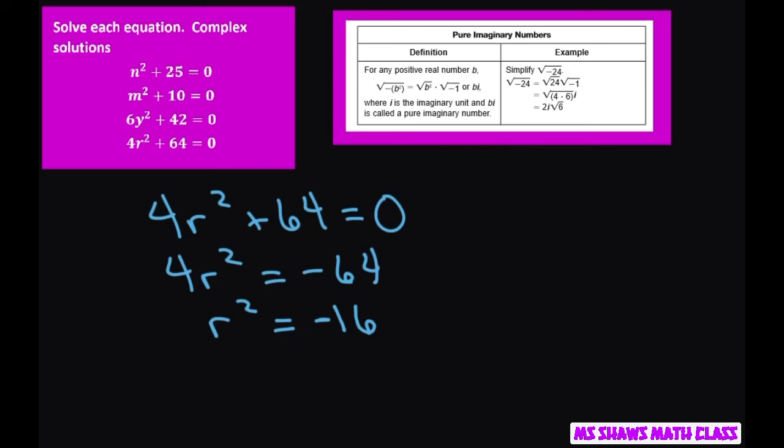You square root both sides, do the plus and minus. So r equals plus or minus—let's break this up—square root of negative 1, square root of 16. Now in this case, we can take complete square root of 16. 16 is 4, and you put the i after it.